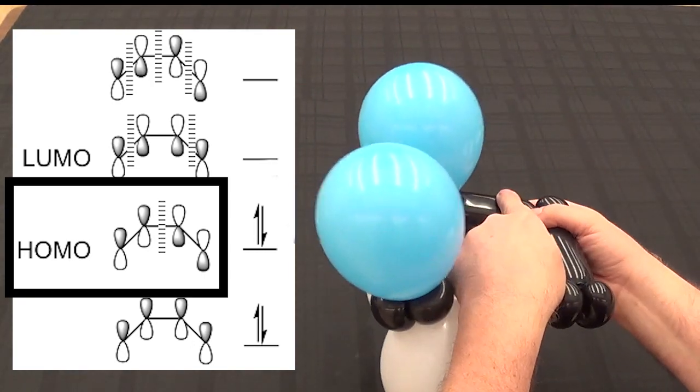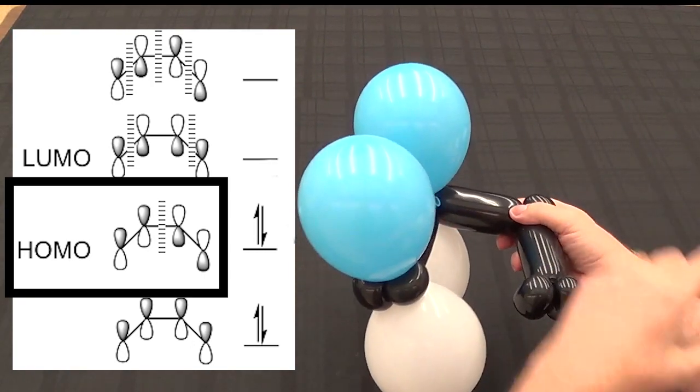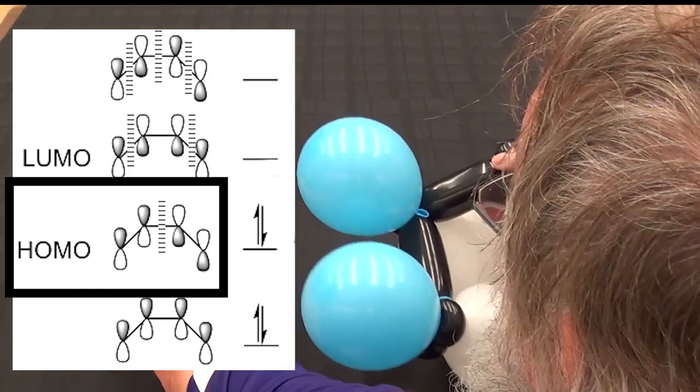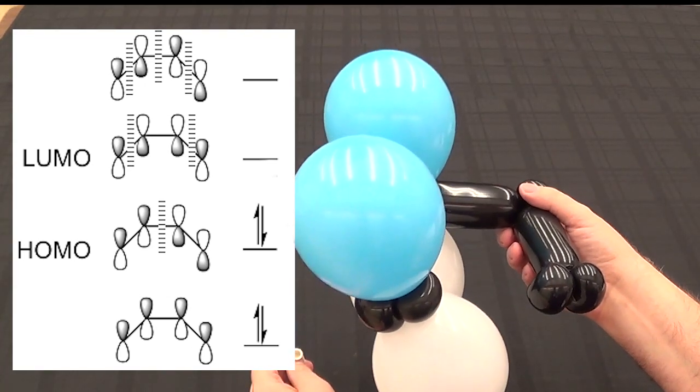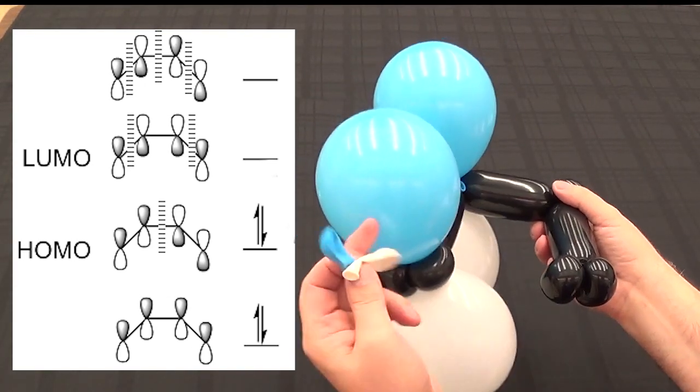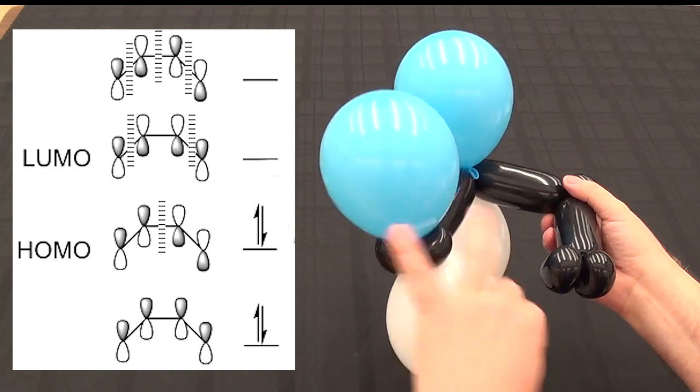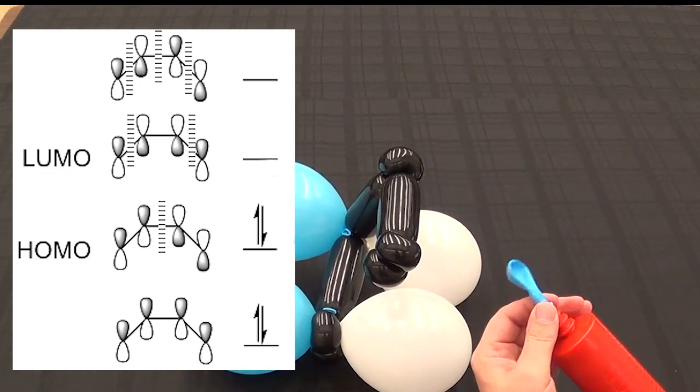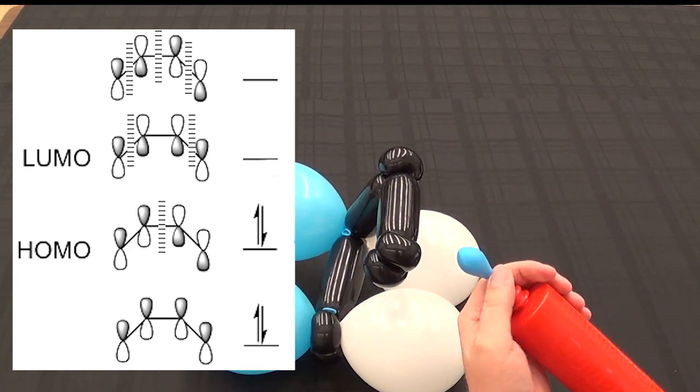There's a phase change. There's a node in the center, so the next two balloons will be opposite. They'll be white on top and blue on the bottom. So you can show all four different orbitals of butadiene by simply switching these back and forth, inverting the balloons to represent the different number of nodes in each of the orbitals.